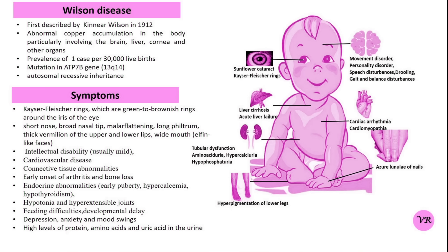Regular monitoring is essential to assess the effectiveness of treatment and ensure that copper levels are appropriately managed. Serum ceruloplasmin and urinary copper levels should be regularly checked to monitor copper metabolism and adjust treatment. Liver function tests and liver imaging should be done periodically to assess liver damage and detect early cirrhosis or hepatic failure. Patients with neurological symptoms or psychiatric issues should be monitored for any changes in their condition.